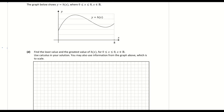Part d: the graph shows y equals h of x. Find the least and greatest values of h of x using calculus. We're thinking about max and min turning points. Looking at the graph, the minimum turning point can be found with calculus, and so can the maximum. But that minimum turning point is not actually the lowest value on the graph — the lowest point is actually below it, so they're trying to catch us out between the minimum turning point and the actual lowest value from the graph.